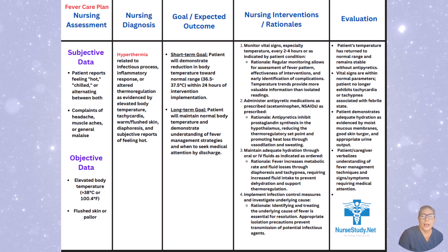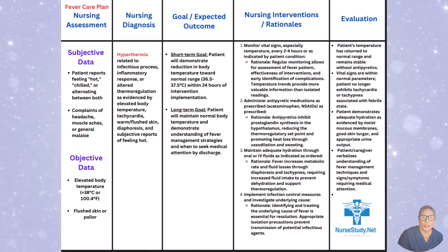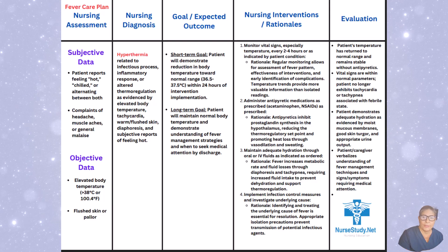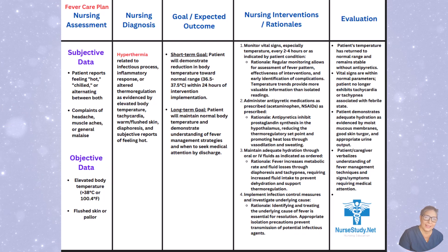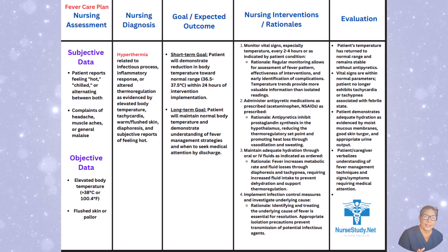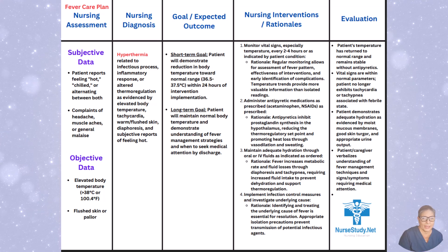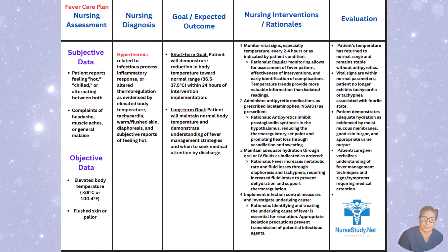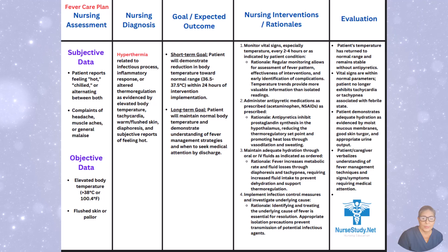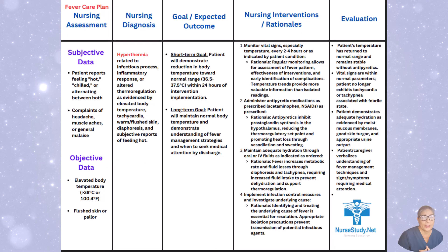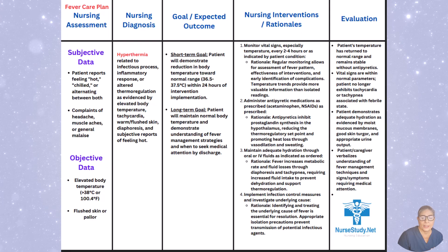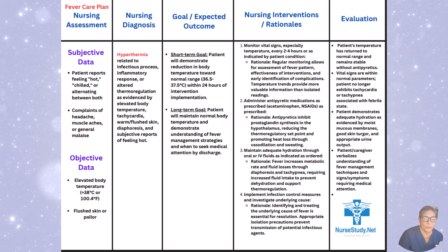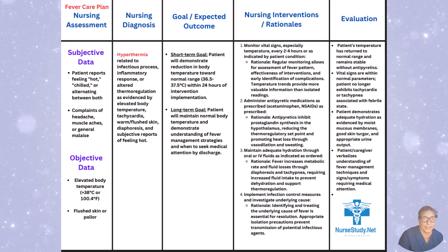For evaluation: the patient's temperature has returned to a normal range and remains stable without antipyretics. You want to confirm that the patient can maintain their own temperature without relying on antipyretics. Vital signs are within normal parameters, and the patient no longer exhibits tachycardia or tachypnea associated with a febrile state. The patient demonstrates adequate hydration — evidenced by moist mucous membranes, good skin turgor, and appropriate urine output. The patient or caregiver verbalizes understanding of fever management and signs requiring medical attention.